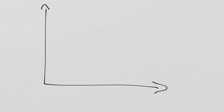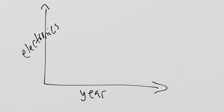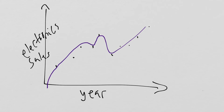Once we learned about polynomials, we learned that when we have real-world data — like the year versus electronics sales — we can use technology to graph a trend polynomial that follows the path of the data points. In 2008 there was a big stock market crash causing sales to dip, then they leveled out and went up again. We can use technology like Desmos and Google Sheets to create polynomials that match real-world data so we can make predictions and better model it.